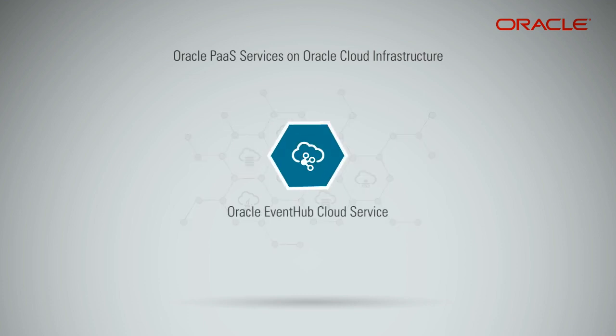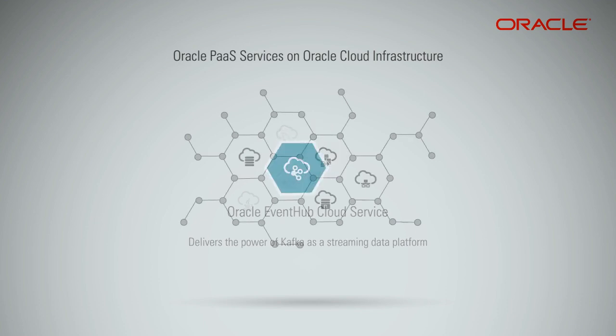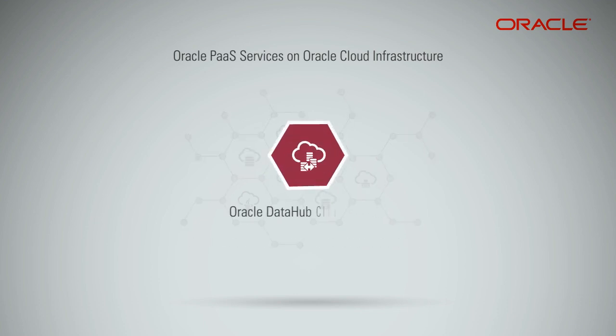Oracle Event Hub Cloud Service delivers the power of Kafka as a streaming data platform. Create topics and start streaming or manage your own dedicated Kafka cluster. Oracle Data Hub Cloud Service is an enterprise-grade NoSQL database platform providing a highly scalable, wide-column, distributed, key-value NoSQL database to power your cloud-native applications.